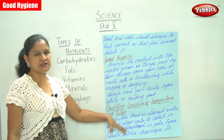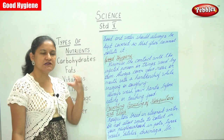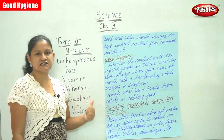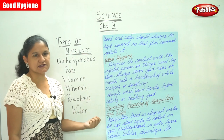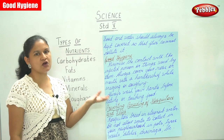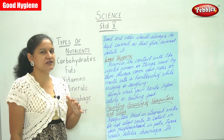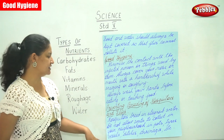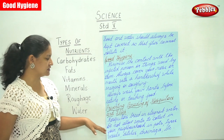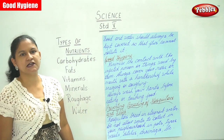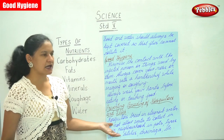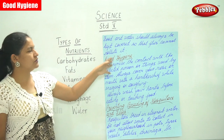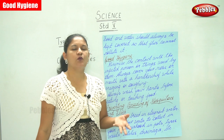Preventing breeding of mosquitoes and flies is important because mosquitoes and flies are the most important carriers of various germs and they are responsible for the spread of many diseases. This is possible only if we do not allow stagnant water to remain in our houses or surroundings. Mosquitoes breed in stagnant water, so do not allow water to stagnate in pots, tires, ditches, drainages, vessels, etc.